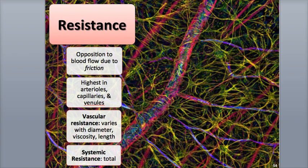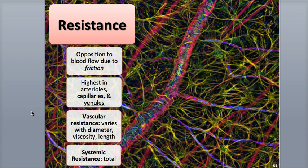We can measure all the vascular resistances generated by the systemic blood vessels. This is called systemic vascular resistance, also known as total peripheral resistance. The smallest diameter vessels — the arterioles, the capillaries, and the venules — have the biggest effect on resistance, while the largest diameter vessels, the arteries and veins, have a much smaller effect on resistance. The arterioles play a big role in systemic vascular resistance and blood pressure because of their ability to change their diameters during vasoconstriction and vasodilation.